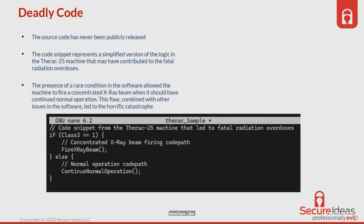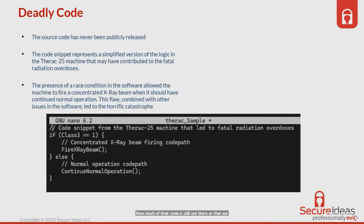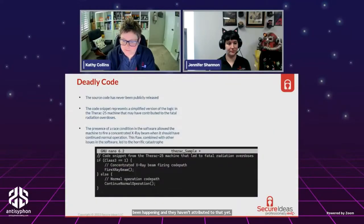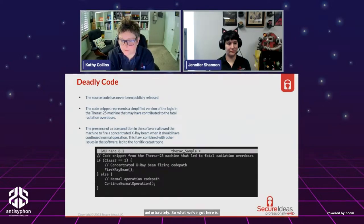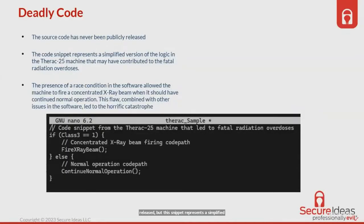The source code represents a simplified version of the logic. As mentioned, the race condition allowed the machine to fire a concentrated X-ray beam when it should have been a normal operation. It's very hard to find exactly where all the race conditions occurred that contributed to this, because there was no transparency — which is very unfortunate, because if they had been transparent, further issues in other software could probably have been avoided.